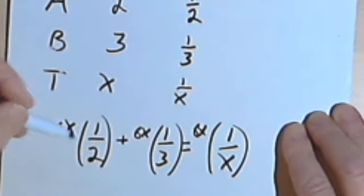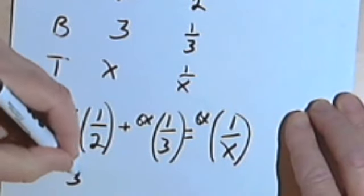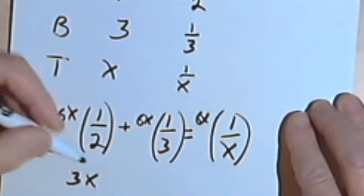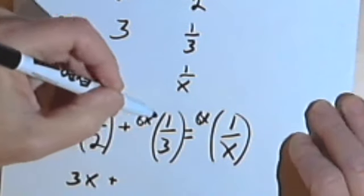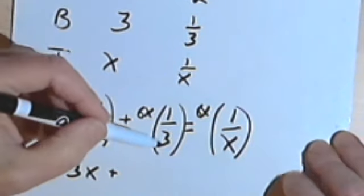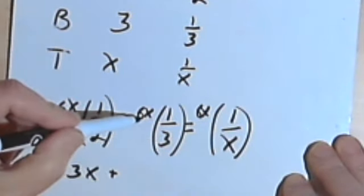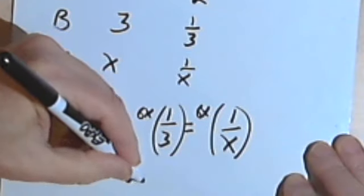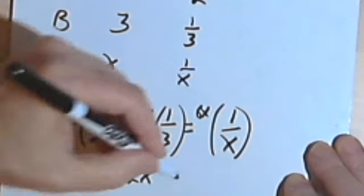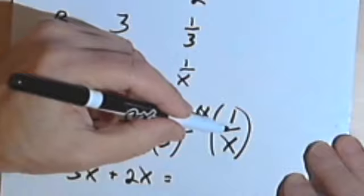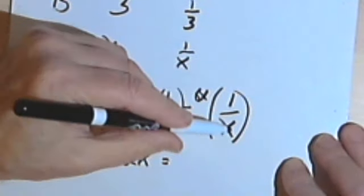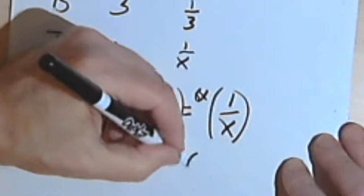6x times one-half, well, one-half of six is three. So that's 3x. 6x times one-third, I can divide a three into both this denominator and into the six. So that will give me 2x. And 6x times one-over-x, I can factor out the x's. I just get a six.